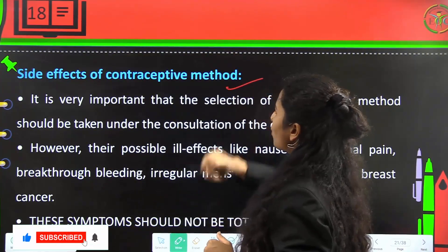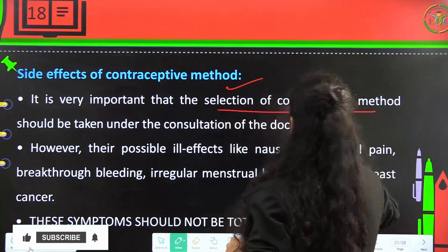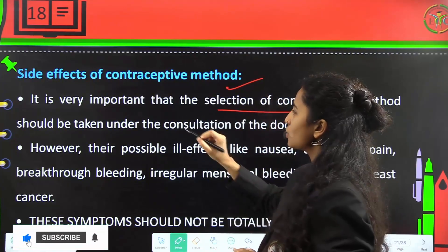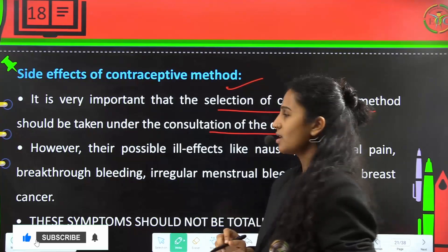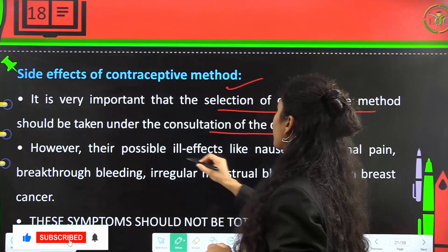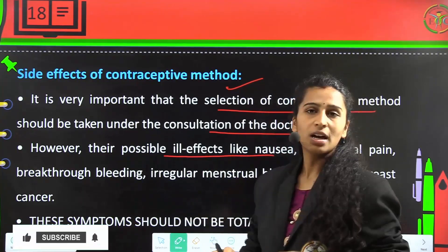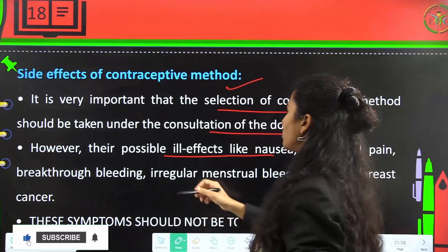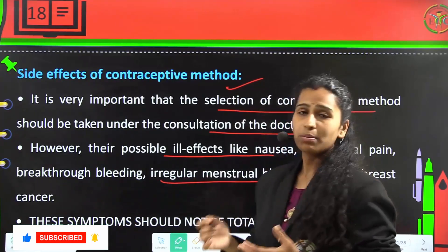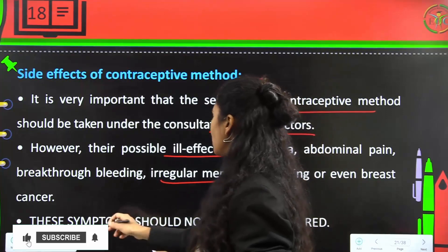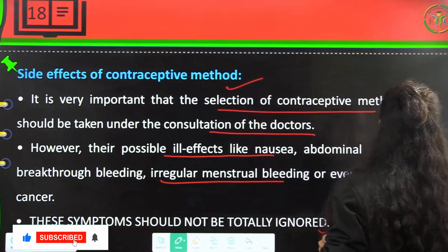Side effects of contraceptive methods: it is very important that selection of contraceptive methods should be done under consultation of a doctor. Possible ill effects include nausea, abdominal pain, breakthrough bleeding, irregular menstrual bleeding, or even breast cancers. These symptoms should not be totally ignored.